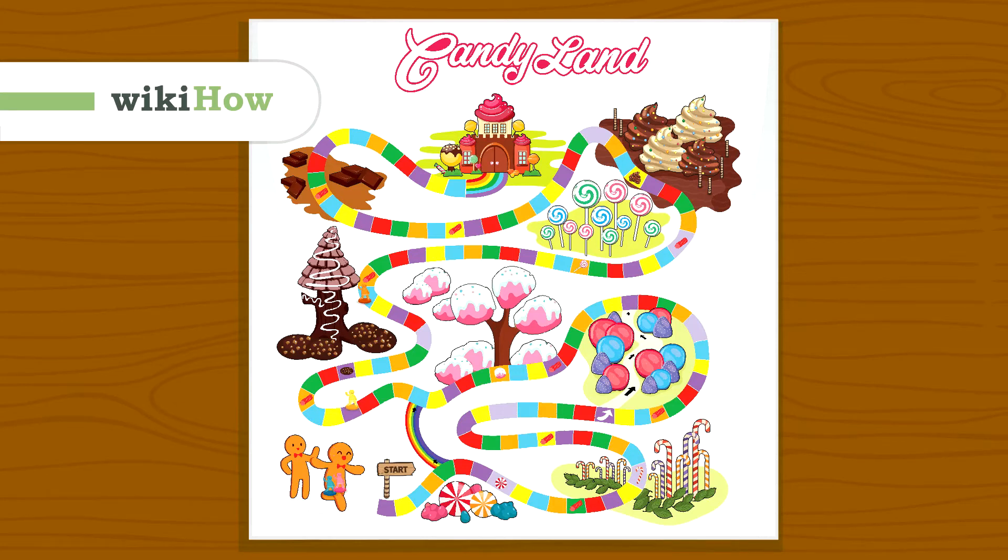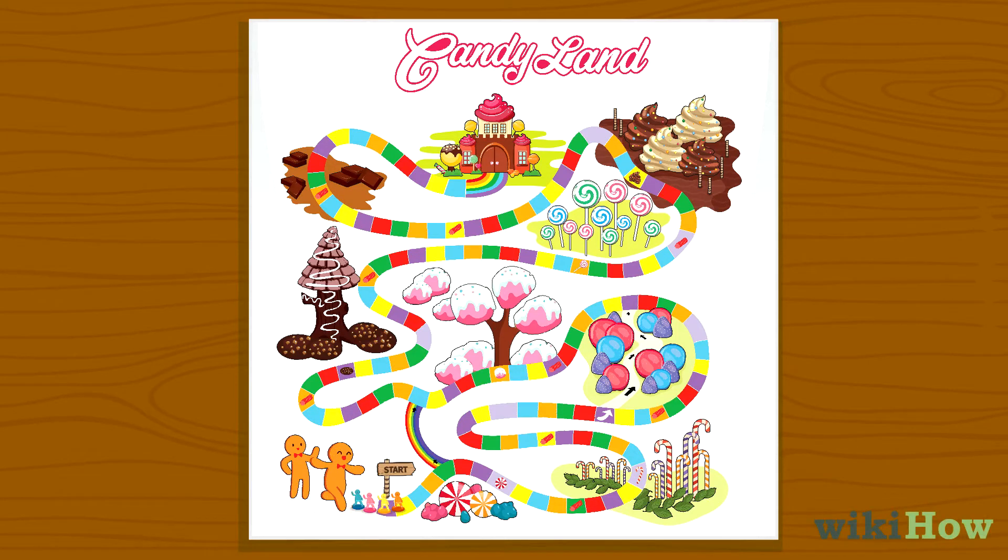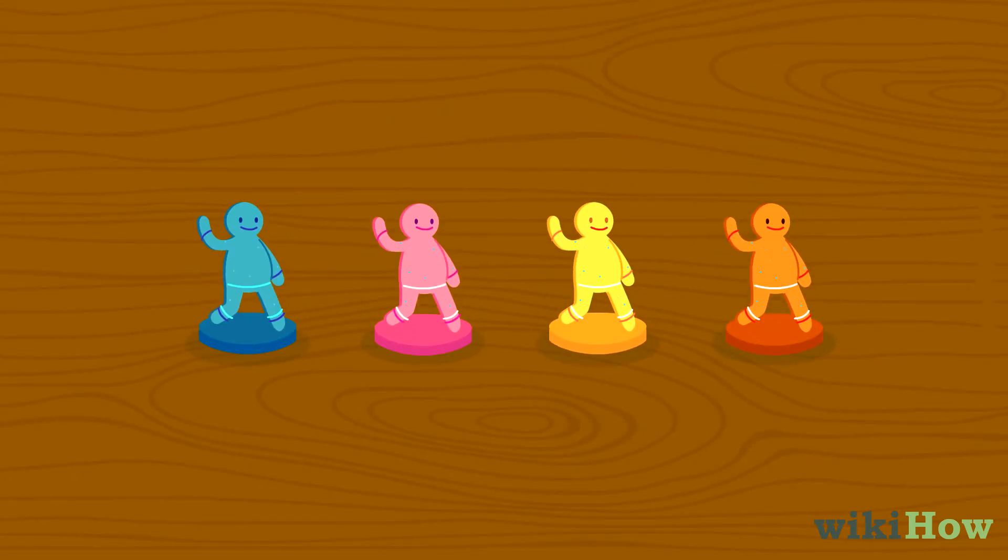Candyland is a fun two-to-four player board game, where players try to make their way around the board and reach the Candy Castle first. To play Candyland, start by having each player choose a gingerbread pawn to play with.